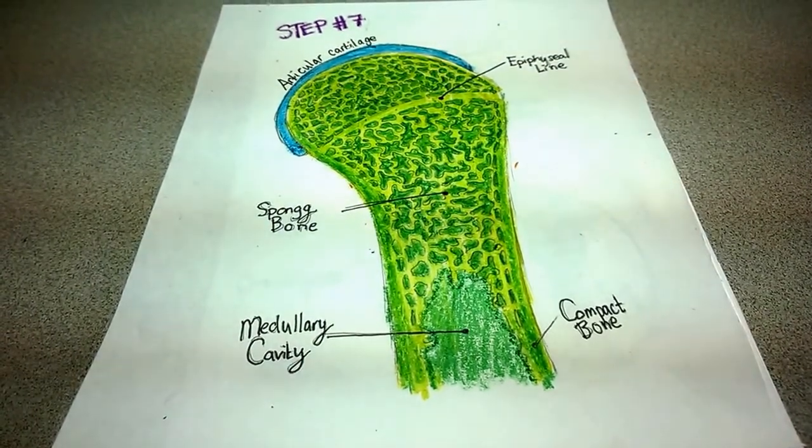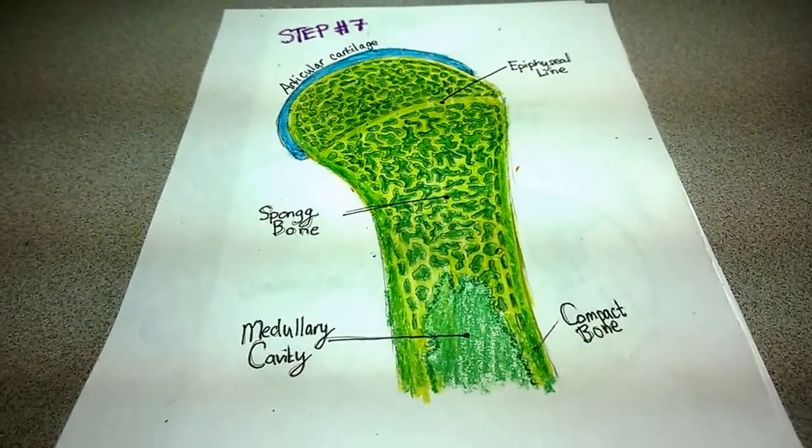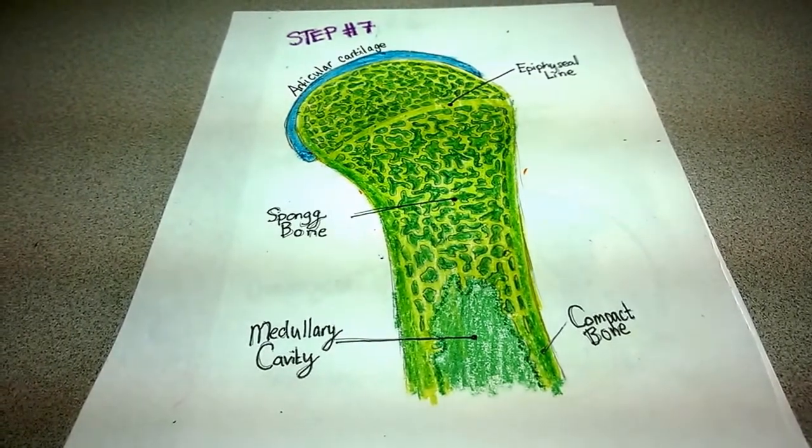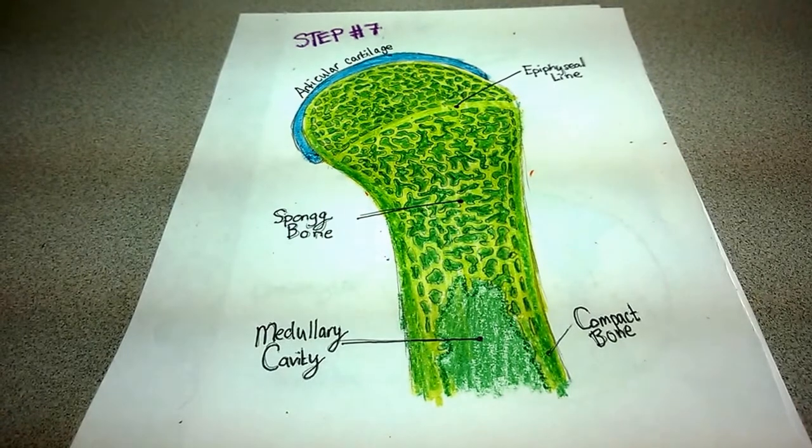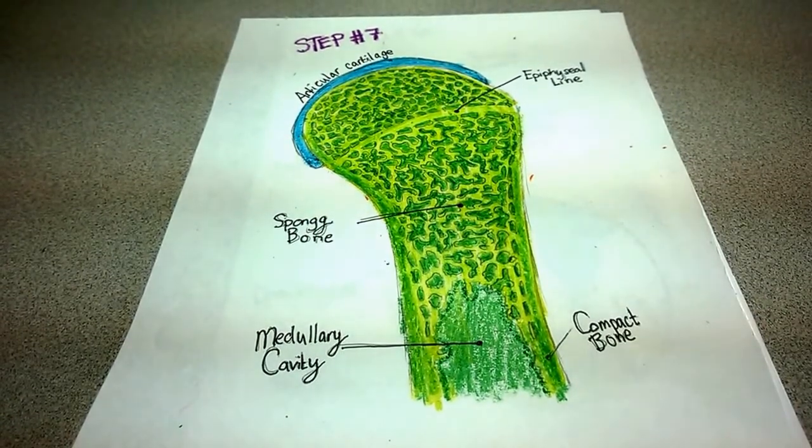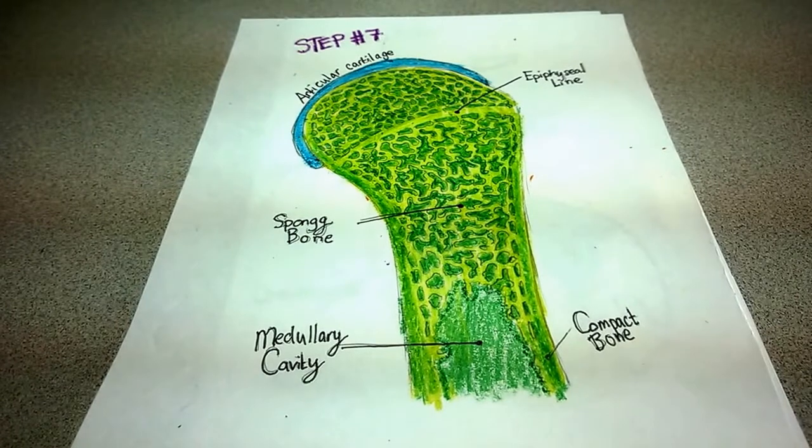A thin layer of cartilage called articular cartilage remains on the top of the femur to prevent bone-to-bone rubbing. Endochondral ossification is a process completed over a child's development. It is both an interesting and necessary process of life.